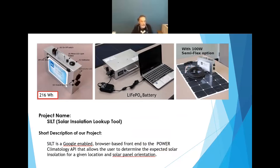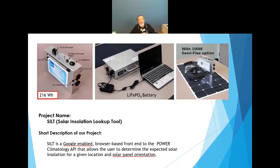The particular project I've been involved in I've dubbed SILT — S-I-L-T — for Solar Installation Lookup Tool. We need to know how much sun we're going to get in various locations of the world as we deploy these small systems. SILT is a Google-enabled front end to the NASA Power API, and it includes panel orientation for determining how much sun you're going to get.